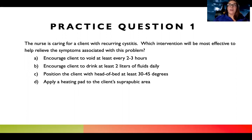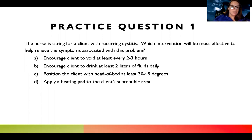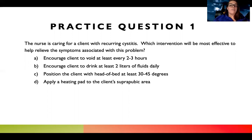This question says the nurse is caring for a client with recurring cystitis. First, I have to know what cystitis is — it's another word for a urinary tract infection, a bladder infection. Anytime you see the word 'cyst,' you should think about the bladder. It's saying it's recurring, so they have it on a regular basis. The question is asking which intervention will be most effective to help relieve the symptoms. I have to know what the inflection of the question is — it says relieve the symptoms, not treat the problem.